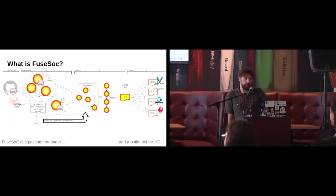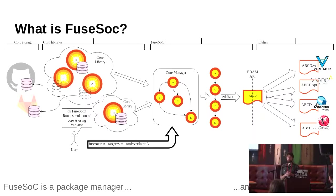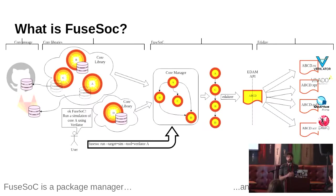It can also be used as a library if you want to integrate it into something else. You request an operation on a core — for example, say you want to run a simulation on a core called A with the tool Verilator. FUSUC will look up its library of cores that it finds either locally or on the internet. You have local cores where you store a core description file together with your RTL files, or you can have a remote core where your core description file is separated from your code.